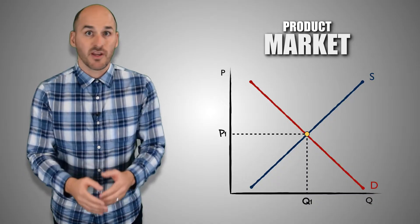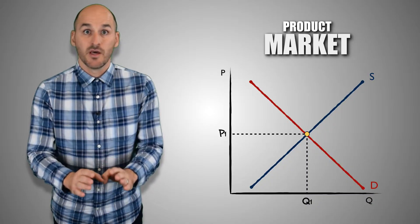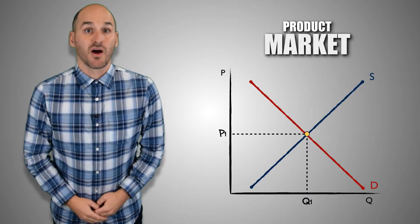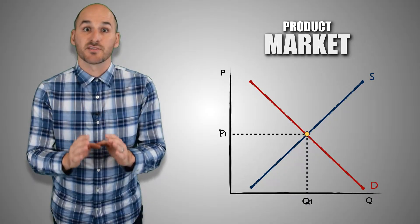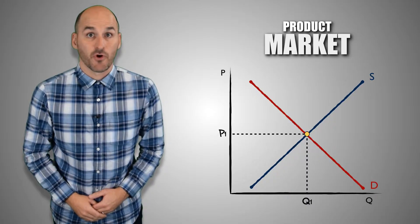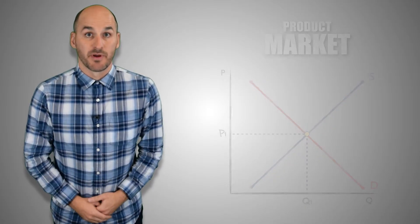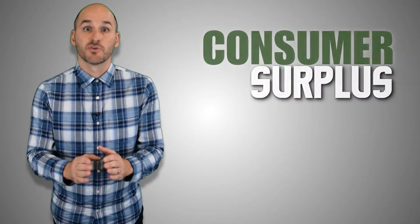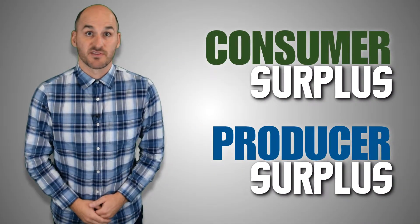If you're still unable to see it, it's all good, because luckily for us, there's a way to actually visualize the total benefit for consumers and firms when a market is at equilibrium. It's called consumer surplus and producer surplus.